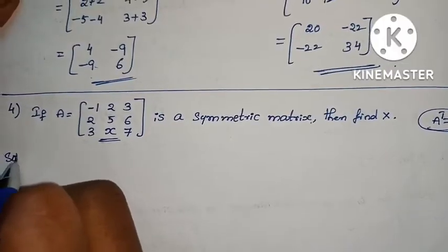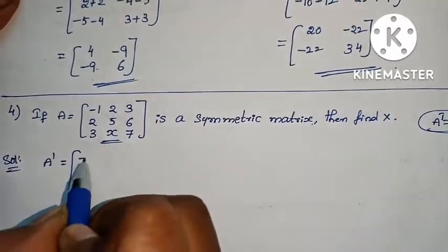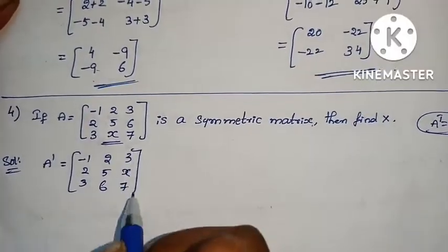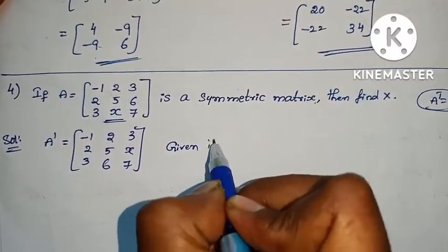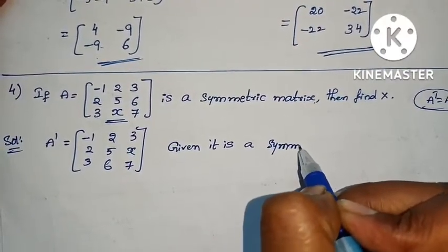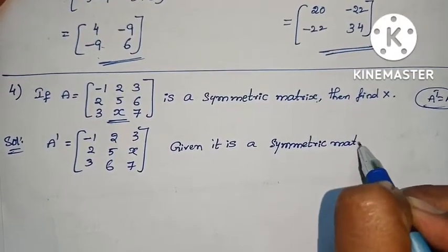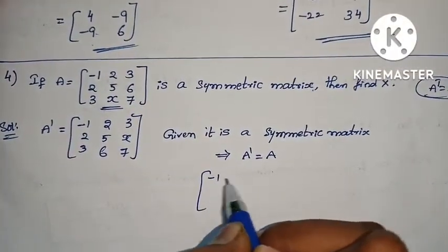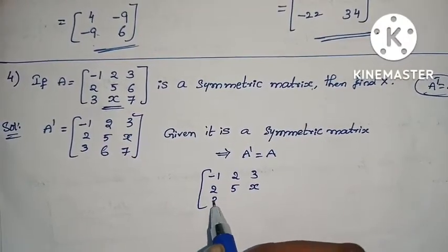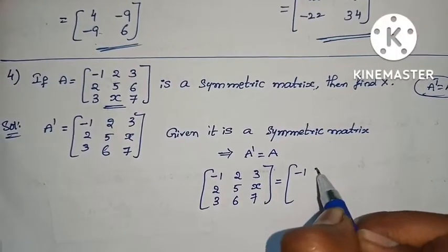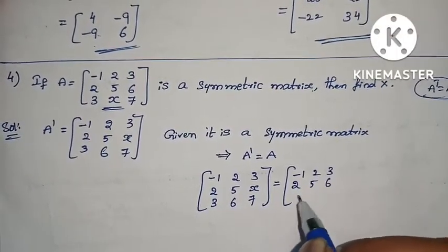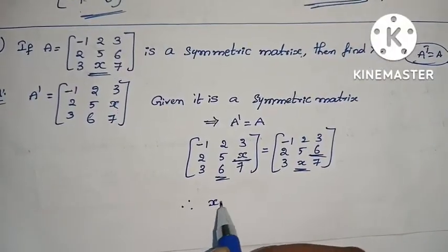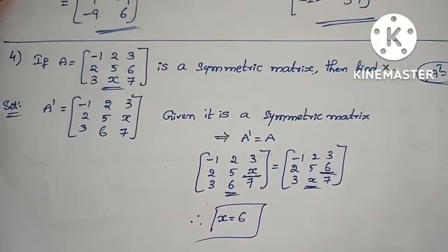Solution: first, A transpose — first row: minus 1, 2, 3; second row: 2, 5, 6; third row: 3, x, 7. Given it is a symmetric matrix, that implies A transpose equals A. Comparing: minus 1, 2, 3 / 2, 5, x / 3, 6, 7 equals A: minus 1, 2, 3 / 2, 5, 6 / 3, x, 7. At the x position, this should be 6. Therefore, x equals 6.